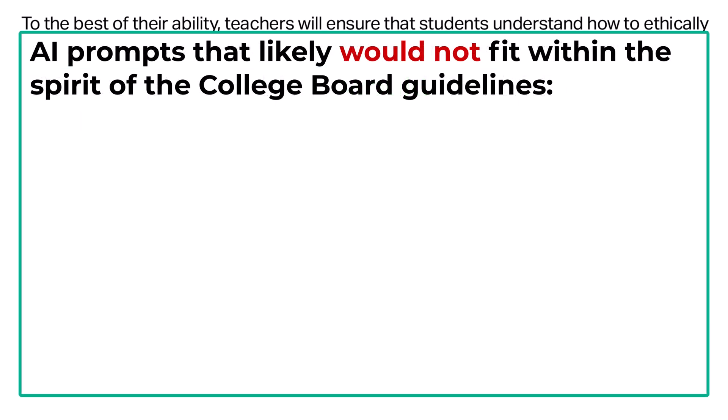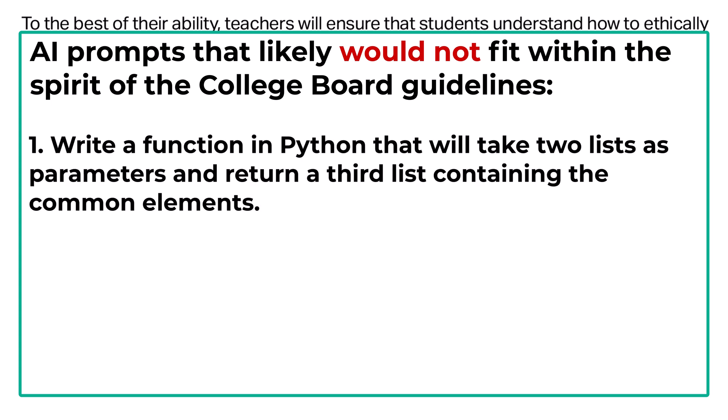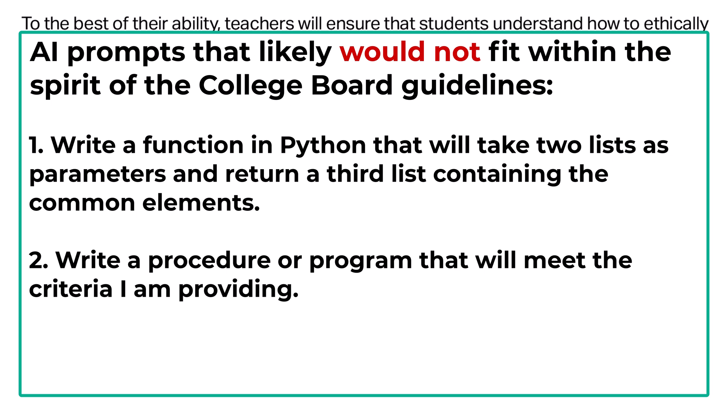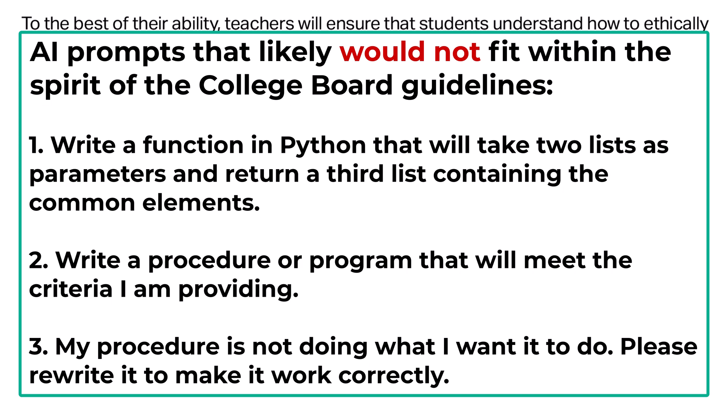Here are some examples of prompts that would likely not fit within the spirit of the College Board's guidance on AI use: 'Write a function in Python that will take two lists as parameters and return a third list containing the common elements.' 'Write a procedure or program that will meet the criteria I am providing.' 'My procedure is not doing what I want it to do — please rewrite it to make it work correctly.'